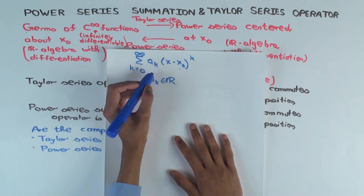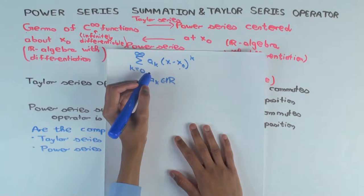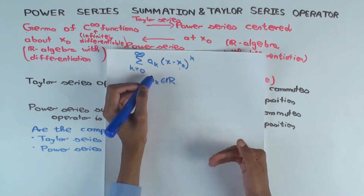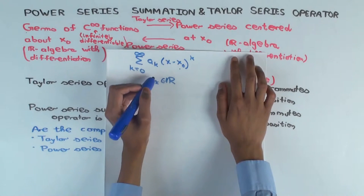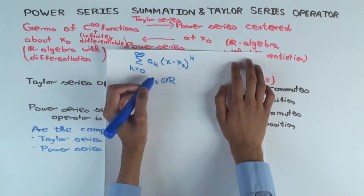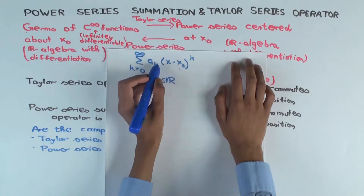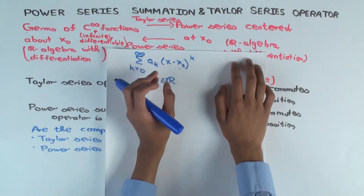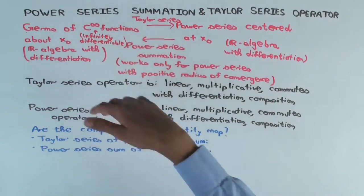For power series, again we have all the structures. You can add two power series centered at the same point by adding them coefficient-wise. You scalar multiply by multiplying each coefficient. You multiply two power series much like how you multiply polynomials — the same type of procedure. And you can differentiate a power series centered at a point formally: you know how to differentiate each power, and then you take the formal sum.